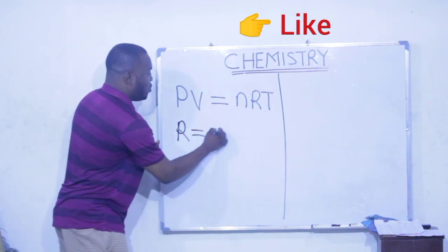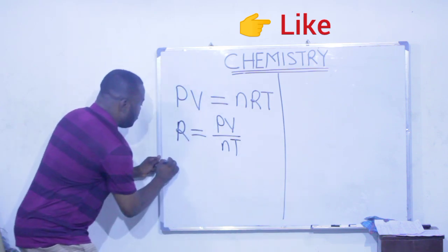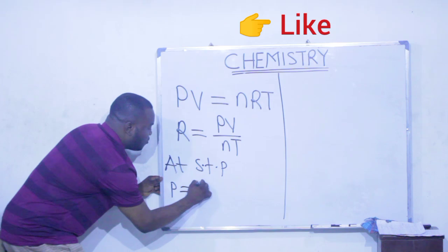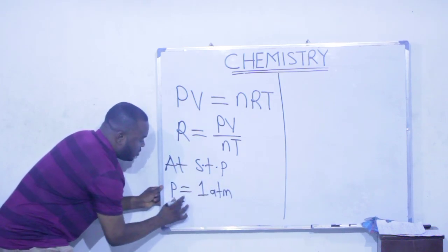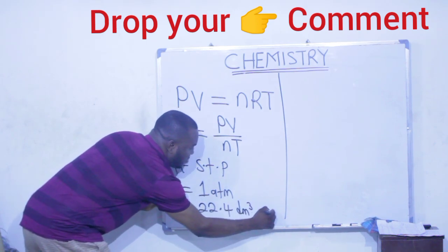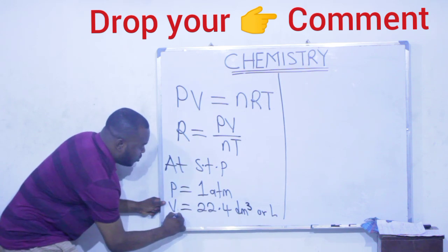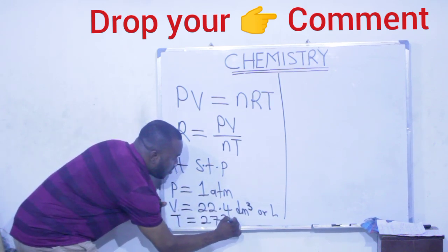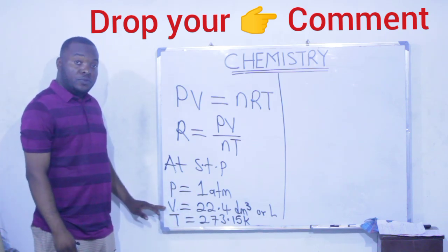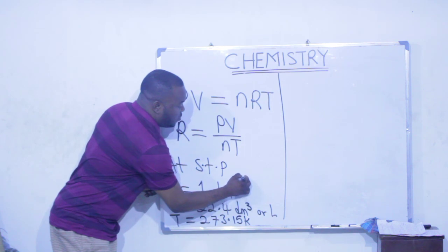Here R will be equal to PV divided by nT. Recall that at STP, pressure is equal to 1 atmosphere, volume is equal to 22.4 dm cube or liter (remember dm cube is the same thing as liter), and temperature is equal to 273.15 Kelvin. These are the values of temperature, pressure and volume at standard temperature and pressure. Now we are given the number of moles here as 1, so our n is equal to 1 mole.